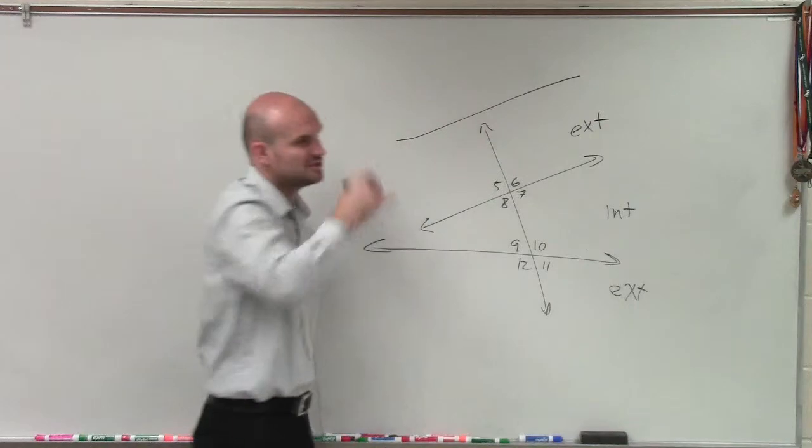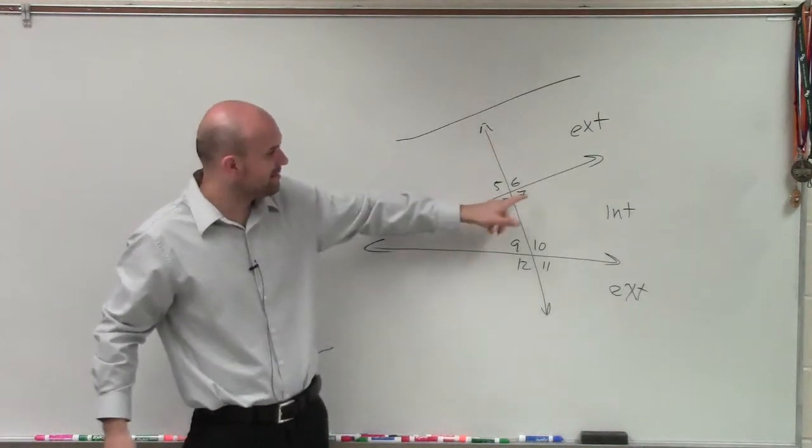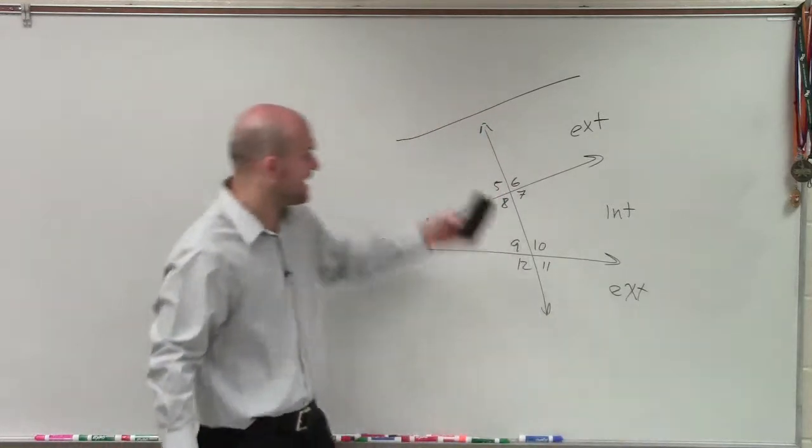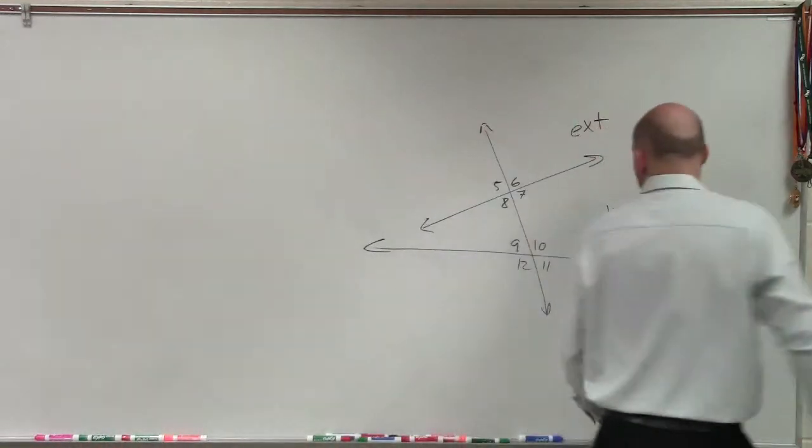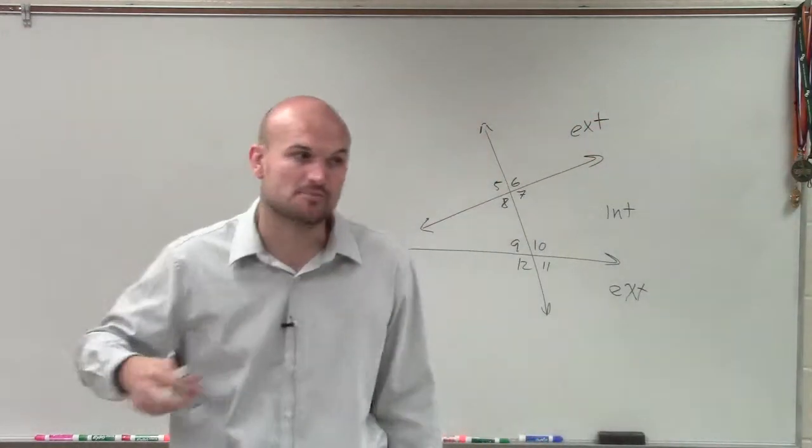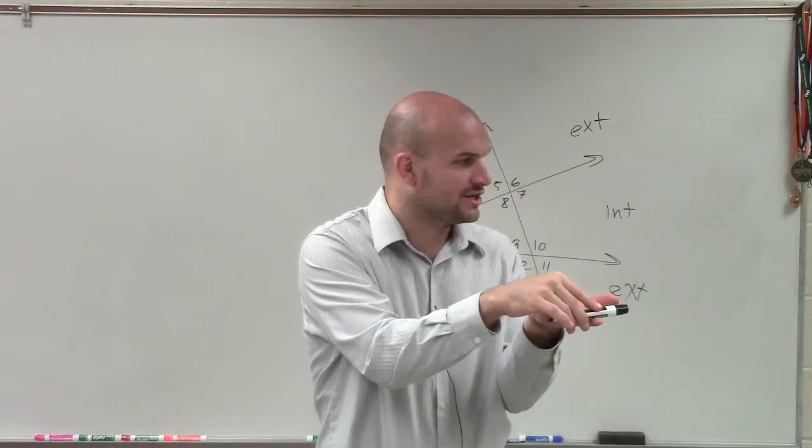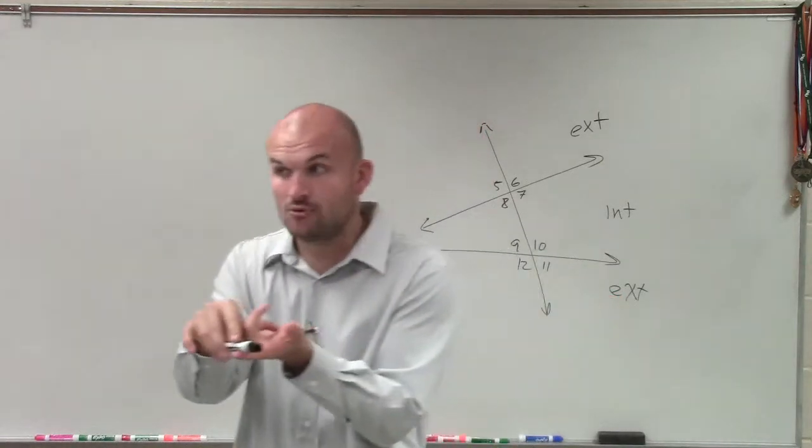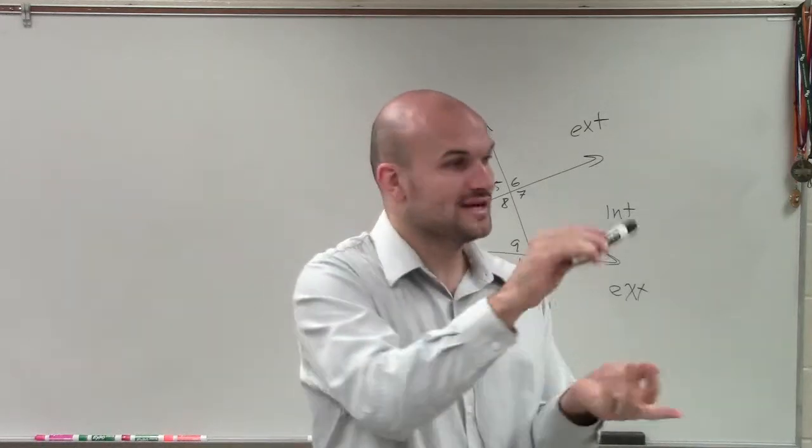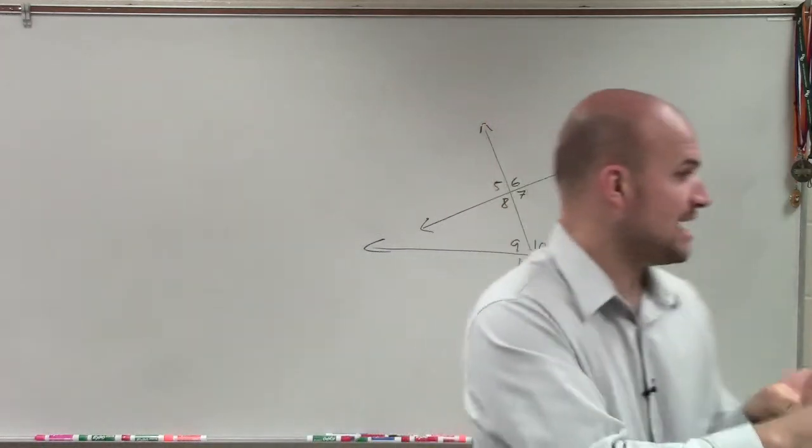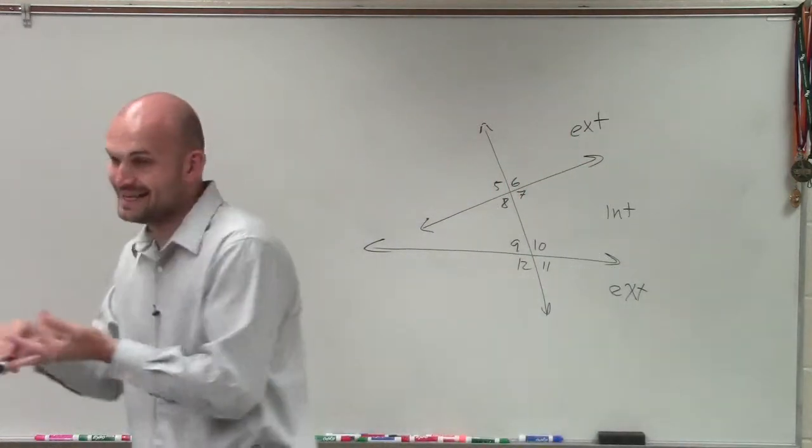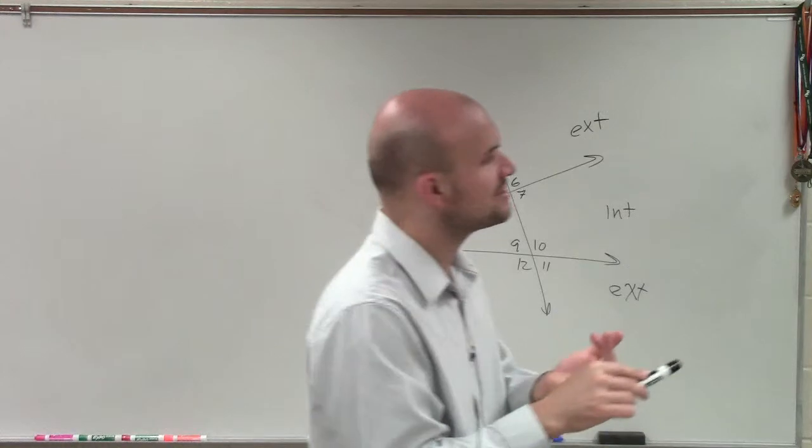And you guys see how it kind of becomes confusing? If I kept that line there, then you might say, well, 7 is exterior of those two lines. But we don't care about that line because it doesn't have any of the angles we're looking for. That's why I erased it. So we have an interior angle and an exterior angle. So let's go back to our angle definitions that we were supposed to know. Alternate exterior dealt with angles that were only exterior. Alternate interior only dealt with angles that were interior. Consecutive interior only dealt with angles that were interior.